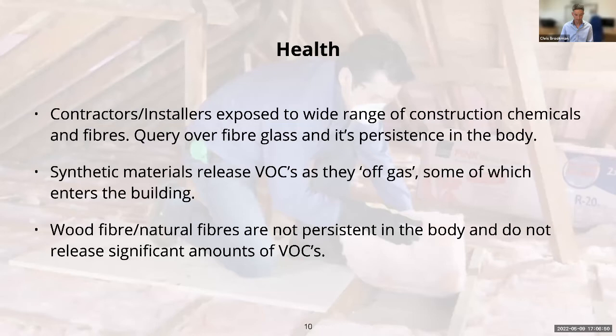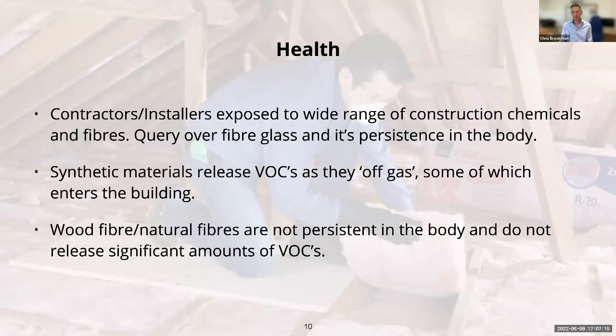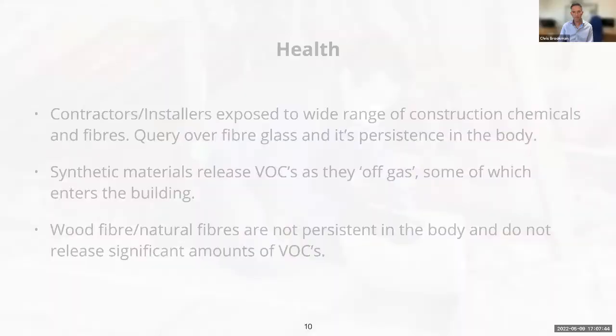Other synthetic materials — PIR rigid boards — off-gas as well; they shrink a little and release VOCs, some of which will enter the building depending on where the insulation is positioned. Wood fibres and natural fibres generally are a fairly inert fibre; they don't persist in the body — your body expels them the same way as any other dust — and generally don't release much in the way of VOCs either. Wood does contain formaldehyde but it's quite a small amount, normally released fairly quickly at the beginning of the product's life.